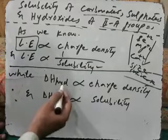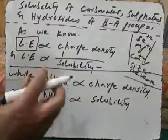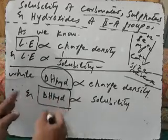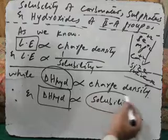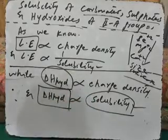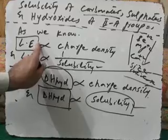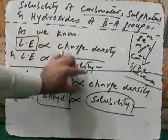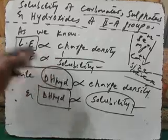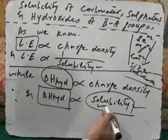The second point: heat of hydration is directly related to charge density. When charge density is higher, ions develop more attraction with water, more energy is released, and that energy is called heat of hydration. More energy released means the system is more stable. So heat of hydration is directly proportional to stability and to solubility. Both lattice energy and heat of hydration have a direct relationship with charge density, but opposite relationships with solubility — lattice energy is a barrier to solubility, while heat of hydration facilitates it.